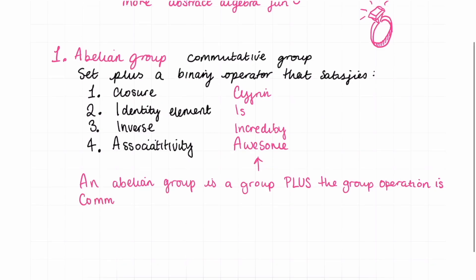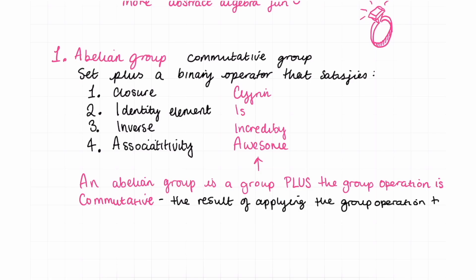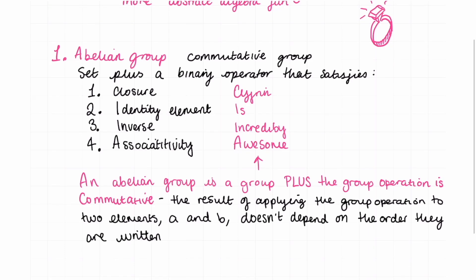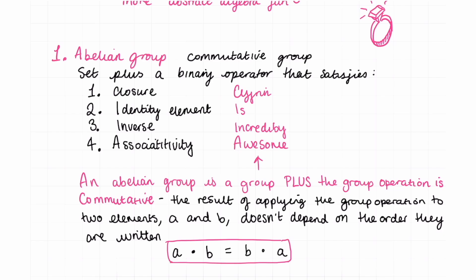An abelian group is a group plus the group operation is commutative. Commutative means the result of applying the group operation to two elements — let's call them a and b — does not depend on the order they are written. Mathematically this means a operated on with b is equal to b operated on with a. So an abelian group is just a commutative group — a group where the operation is also commutative.